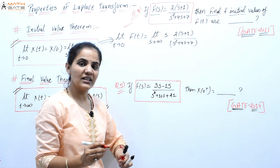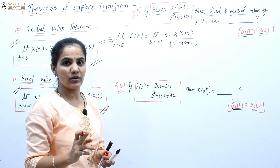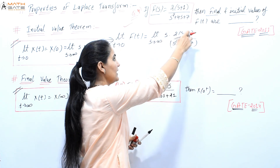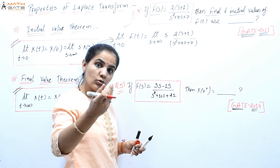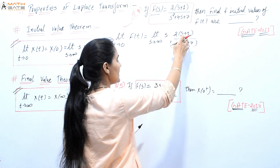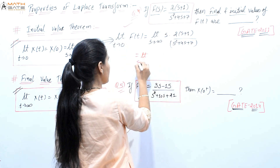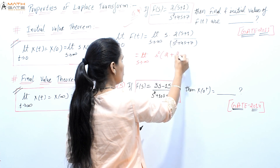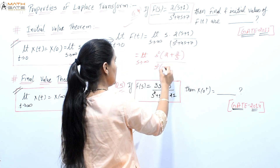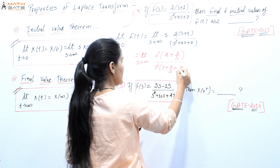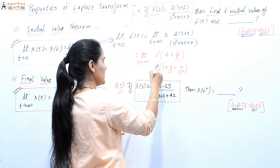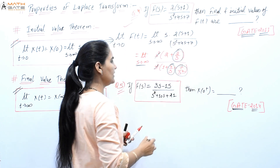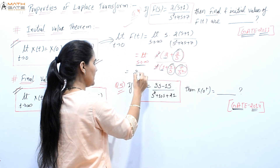When we have limit s tends to infinity, we divide numerator and denominator by the highest power of s. Here we divide by s², giving 2(1/s + 1/s²) / (1 + 4/s + 7/s²). The s² cancels, and as s→∞ all terms with 1/s go to zero, leaving 2/1 = 2. So the initial value is 2.